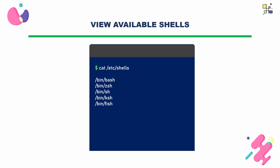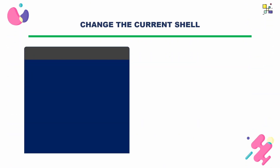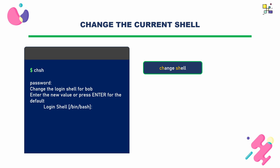Select the shell you want based on the list of available shells. You can change your default shell for your user account by using the command chsh, which stands for Change Shell, followed by the path to the shell executable you want to use. Make sure to enter the correct path. After changing your shell, log out of your current session and log back in to activate the new shell. When you log in again, the new shell should be the default one on your system.